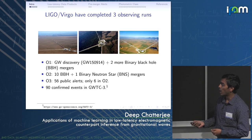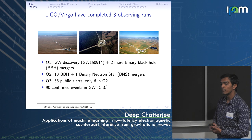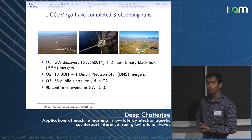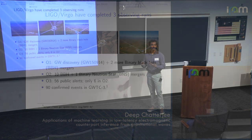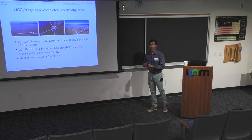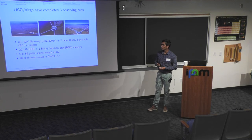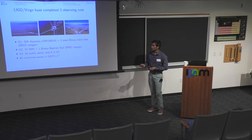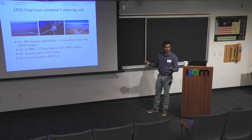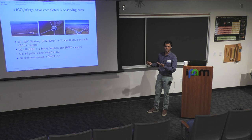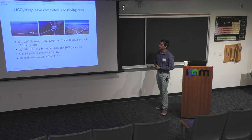A lot of this we already knew from beforehand because O3 was the first time when there was effort and infrastructure put in to relay discovery information publicly. A total of 56 public alerts were sent out. For comparison, in O2 these alerts were not public, but still six were sent out during O2.